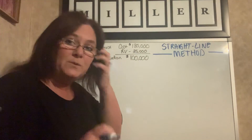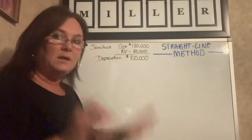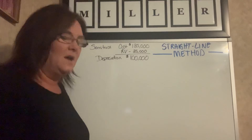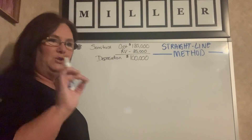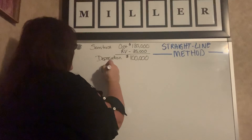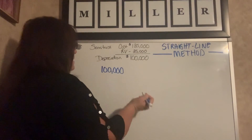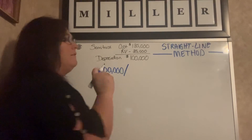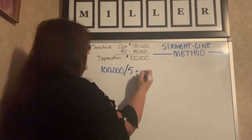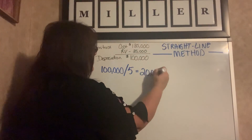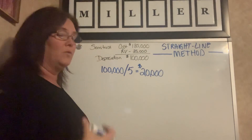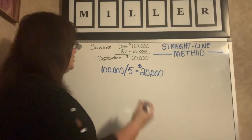In the straight-line method, we depreciate this asset equally every single year. The asset was useful for five years, so we're going to take the depreciation amount — not the cost, the depreciation amount — and divide it by five years. $100,000 divided by five equals $20,000. We're going to expense that evenly over a period of five years.